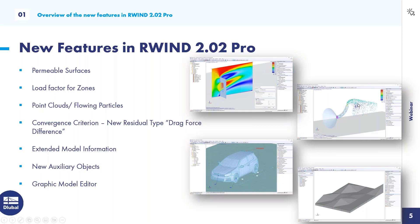We also added point clouds. This allows you to track flowing particles in the analysis — specifically in the transient flow analysis — so you can see where the wind is coming from and where it's going. It's a useful tool to follow your wind particles, and it's also available for streamlines.